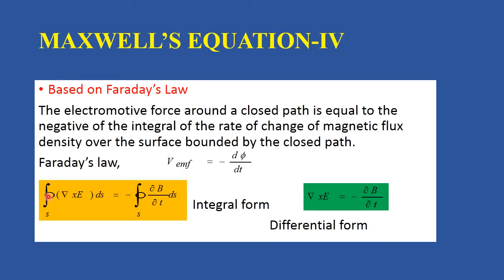Maxwell's Equation 4 is based on Faraday's Law. The electromotive force around a closed path is equal to the negative of the integral of the rate of change of magnetic flux density over the surface bounded by the closed path. That is, V_EMF equals minus d phi by dt. The integral form is written as the surface integral of del cross E dot dS equals minus the surface integral of dou B by dou t. The differential form is del cross E equals minus dou B by dou t.